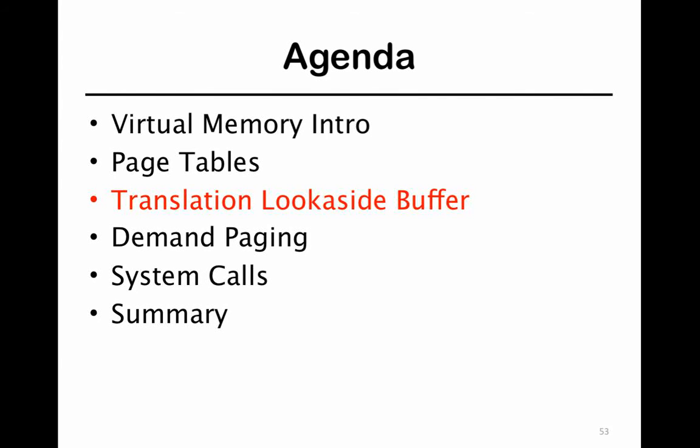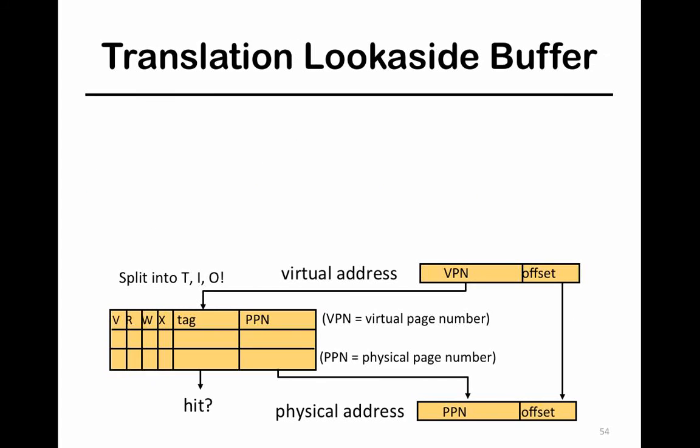In this segment, we will be looking at translation look-aside buffers, or TLBs. TLBs are primarily a cache for page tables. You'll see why we need them and why they are very important for performance purposes and how much we've come to rely on them. All hardware that we know of today does have TLBs.